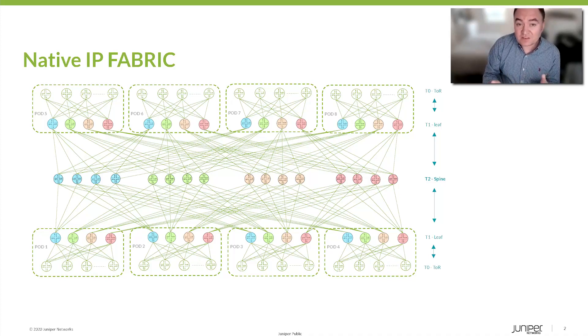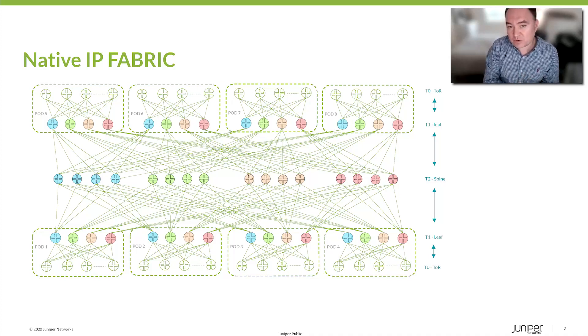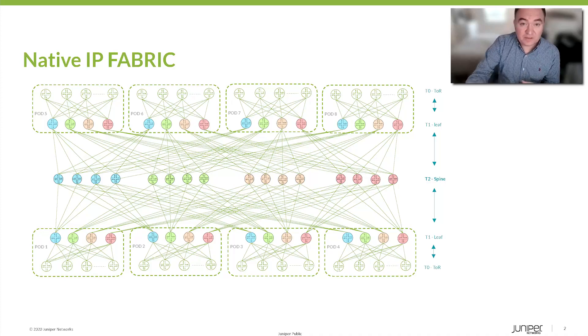The last point is the load balancing capabilities. Whenever we start investing in 100 gig, 400 gig, or 800 gig, we want to make sure that the load balancing capabilities of the top of the rack are efficiently implemented, so that this bandwidth is not wasted and we use all of the possible links in order to get the most performance from the network.